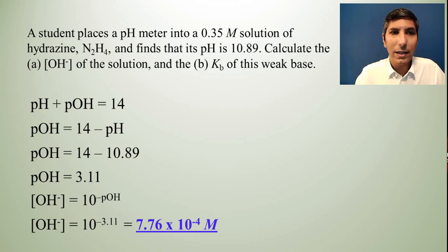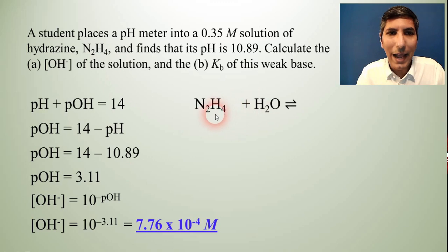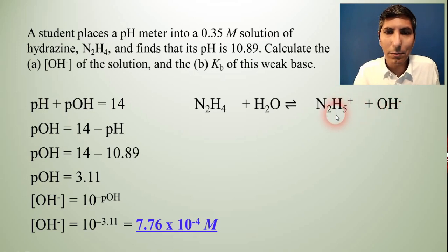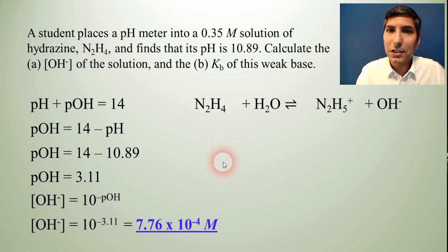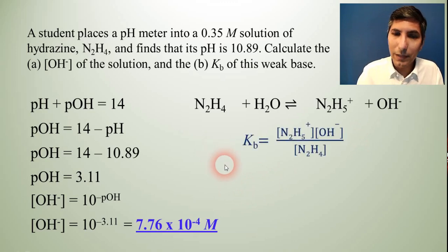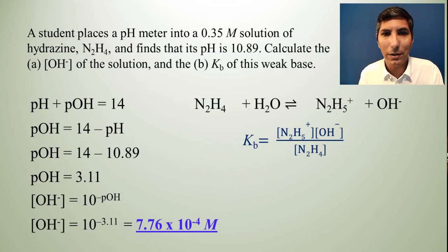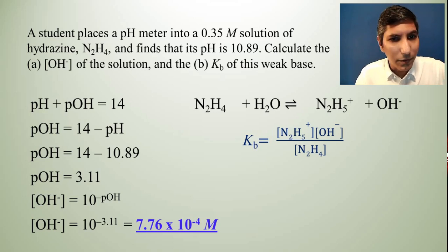Now for part B we need to find the Kb. Well in order to calculate Kb we have to have a Kb expression. And in order to have a Kb expression we have to have an equation which we haven't written yet. So let's do that. The hydrazine is N2H4 and of course it's added to water. The products are going to be the conjugate acid which is N2H5+ and hydroxide. So always your products will be the conjugate acid and hydroxide. So if that's the case our Kb expression is just N2H5+ times OH- all over N2H4 equals Kb.